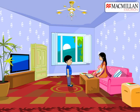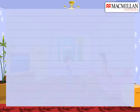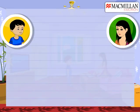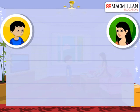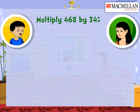Oh, that's simple. Tell me the values, then I will tell you how we do that. Multiply 468 by 342.